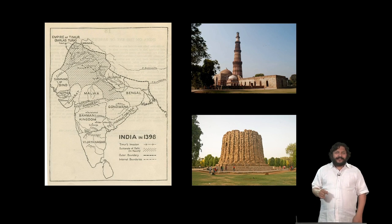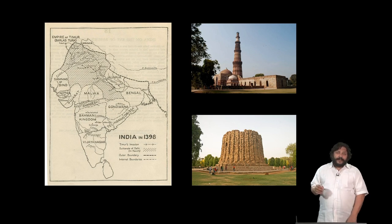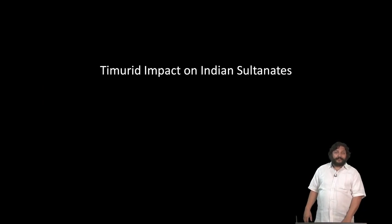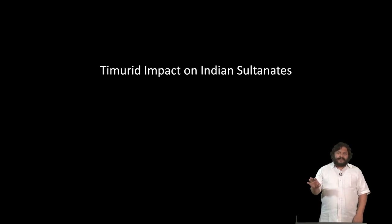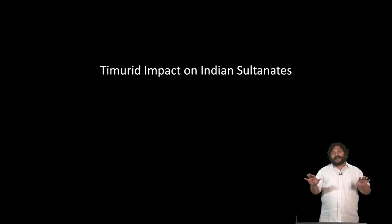A hundred years of the Delhi Sultanate is completely disrupted by a great dynasty in Central Asia called the Timurids under their Sultan Timur. Timur invades India in the 1390s, really limiting himself to the Sultanate of Delhi. But his name, fame, and architectural creations have a very big impact on all the small sultanates across multiple regions in India who had declared independence from Delhi.